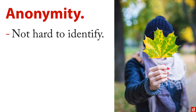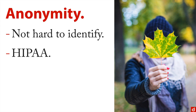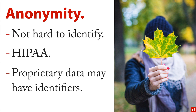Next is anonymity. It's really not hard to identify people in data. If you have a little GPS data and know where a person was at four different points in time, you have about a 95% chance of knowing exactly who they are. HIPAA — the Health Insurance Portability and Accountability Act — made it much more difficult to identify people from medical records, which is important for people's well-being. With proprietary data from a client or company, identifiers may remain, so even if you do know who they are, you must still maintain privacy and confidentiality.